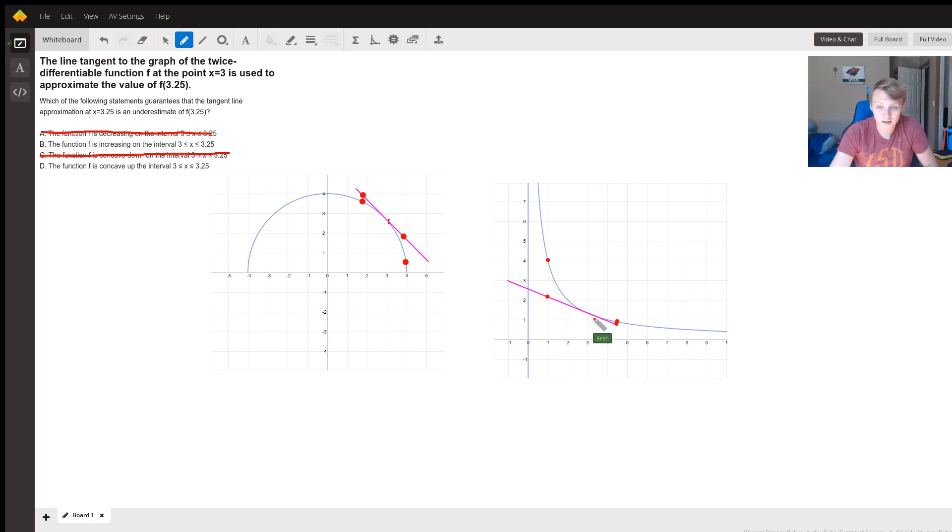Especially since the line is so thick, but if it's truly a tangent line, it only touches the function at one point, and at every other point you can see that it's less than. So it'll be less than at 3.25 compared to the actual value of the function.